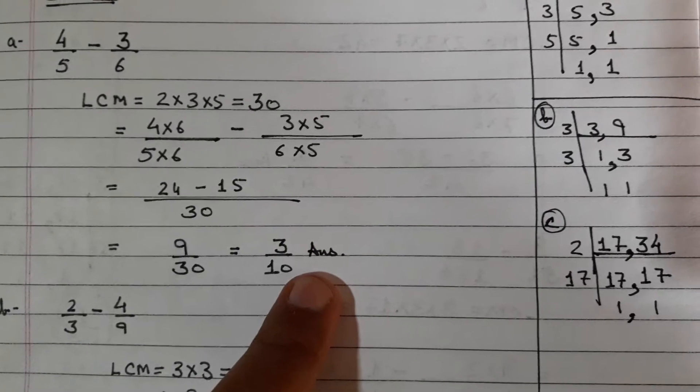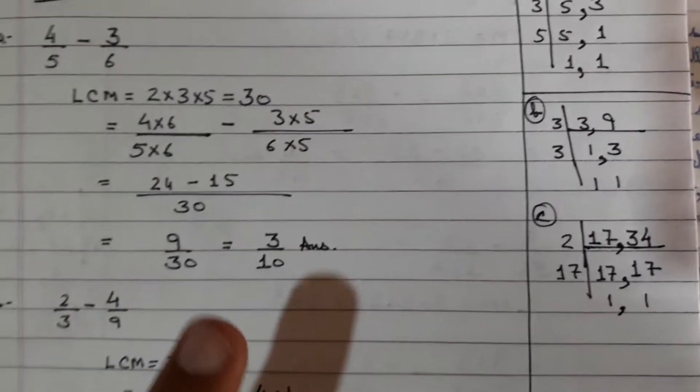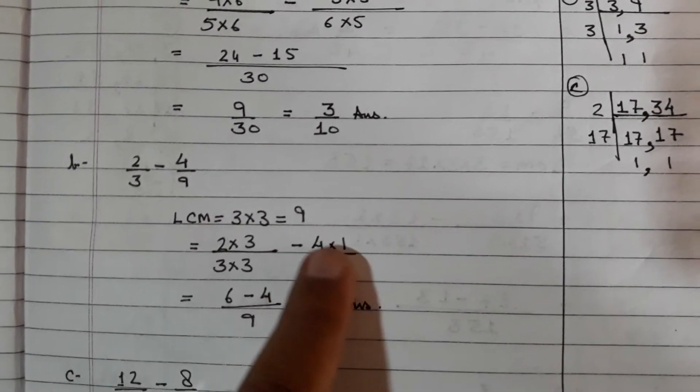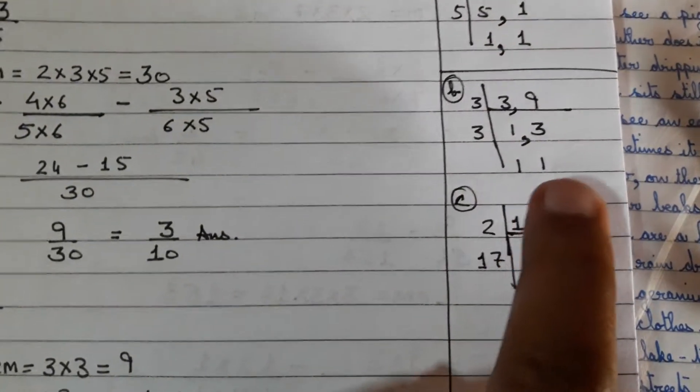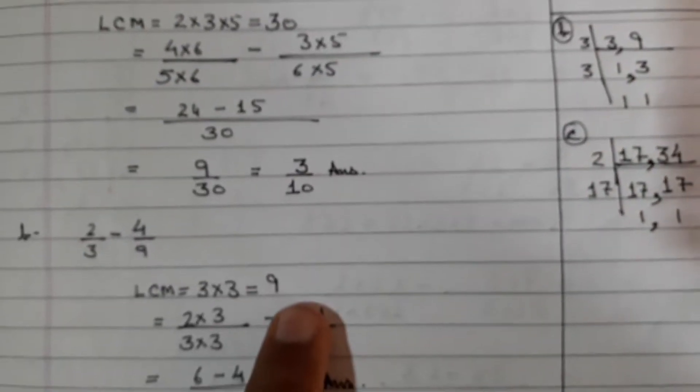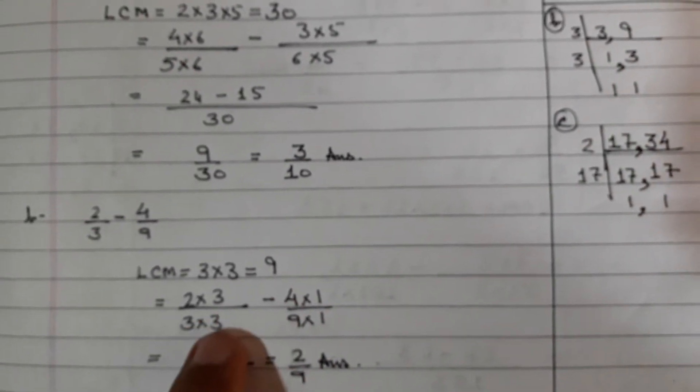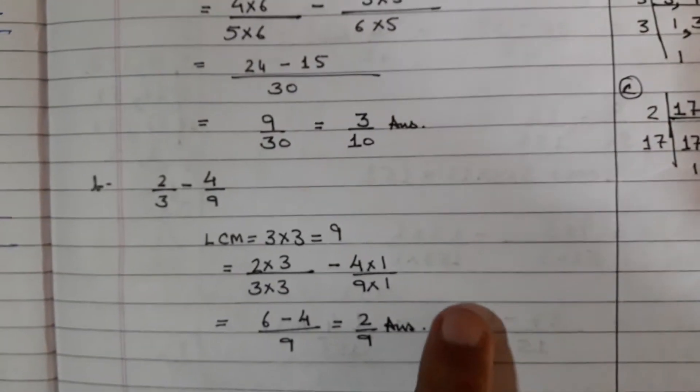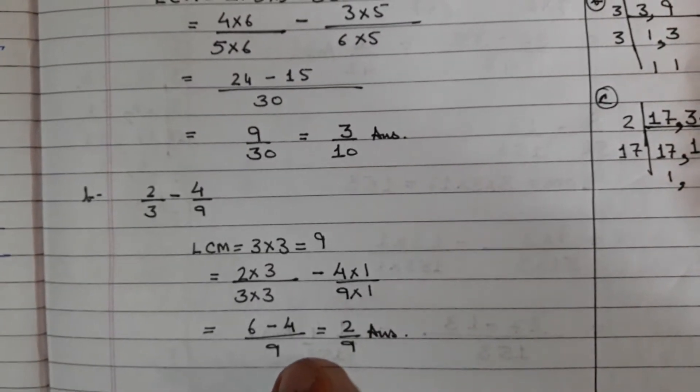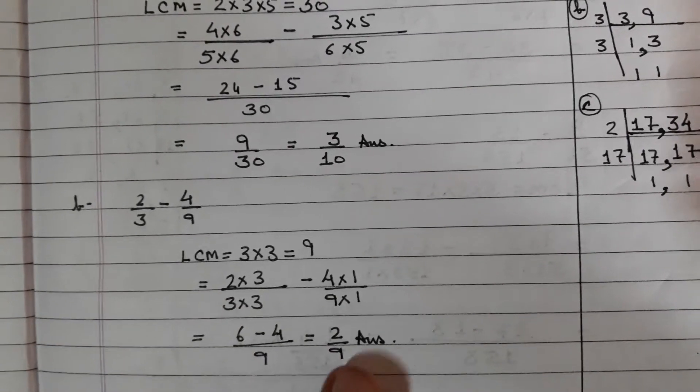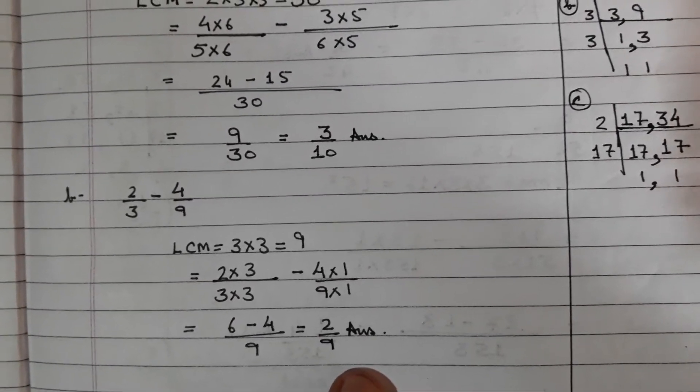It is exactly like the addition. I will spend more time over the sums which require deliberation. 2 over 3 minus 4 by 9. LCM in this case, 3 and 9, 3×3, LCM will be 9. 3 to become 9 will be multiplied by 3 and 9 by 1. So 2×3 minus 4, 6 minus 4, 2 over 9 is your final answer.